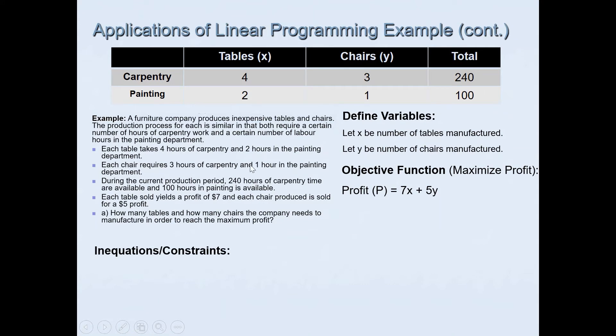We will use this information to create the equations. For carpentry we've got 4x + 3y is less than or equal to 240. Remember 240 hours is the maximum carpentry time that's available, so they can use 240 or less. Likewise we've got painting: 2x + y is less than or equal to 100 because that was the maximum time that's available.